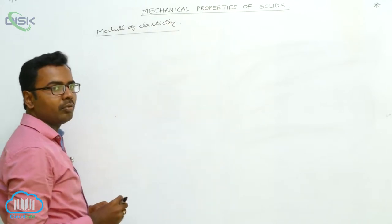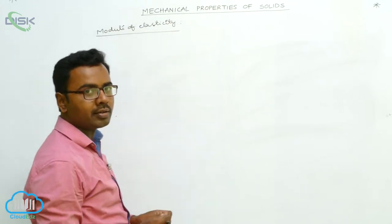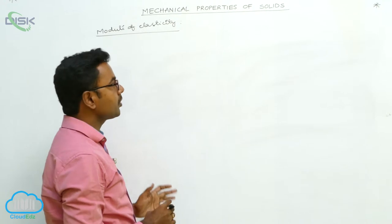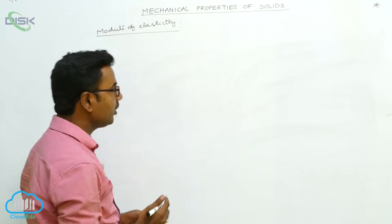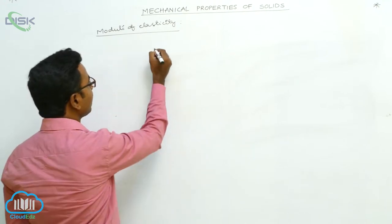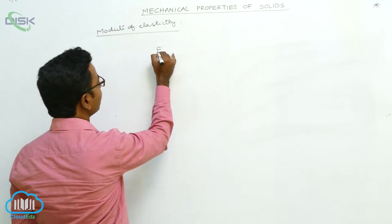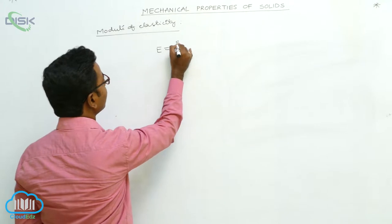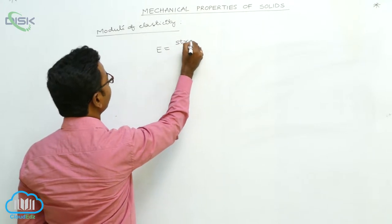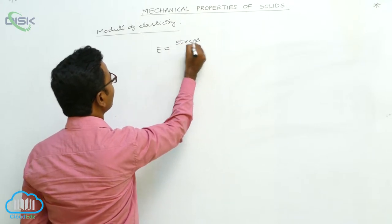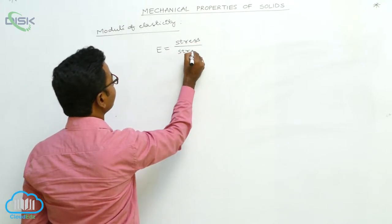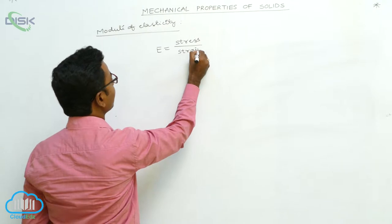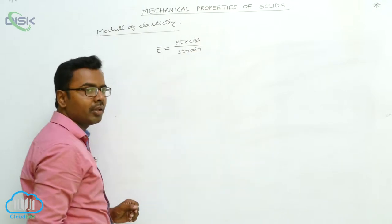There are three types of moduli of elasticity. Modulus of elasticity is the ratio of stress to strain. We know that stress and strain are of three types, and correspondingly there are three types of moduli of elasticity.